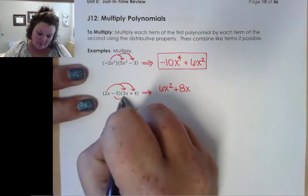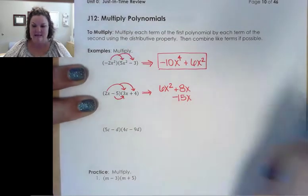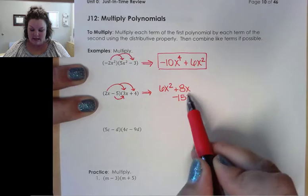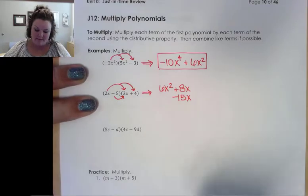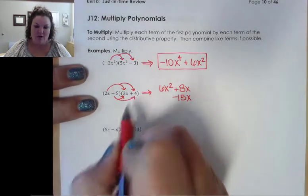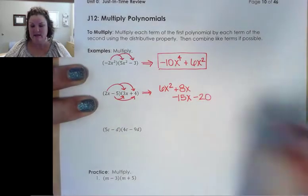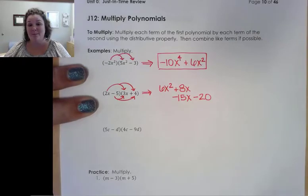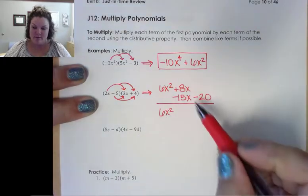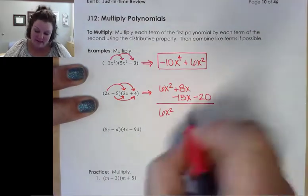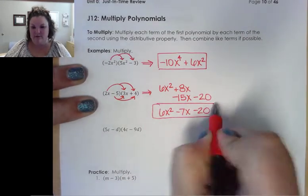And then I need to distribute the second term. So all of that just came from this first term. So now I want to look at the second term. Negative 5 times 3x is going to give me a negative 15x. And instead of writing it all out in one line, since I know 15 and 8 are going to be like terms, I'm just going to line them up because it makes it a little bit easier to combine them later. And then we need to do our negative 5 times our 4. So negative 5 times positive 4 gives me a negative 20. And now that I have it all multiplied out, now I'm just combining like terms. So I have my 6x squared. When I combine my 8x and my negative 15x, I get negative 7x and then my negative 20.